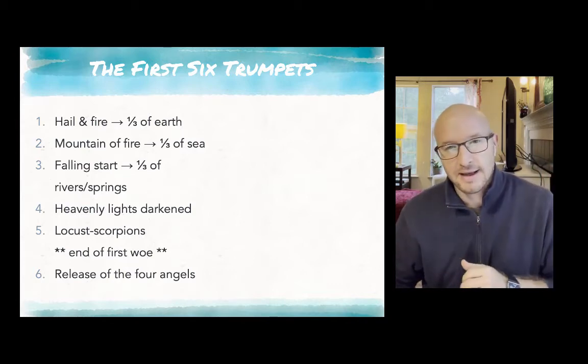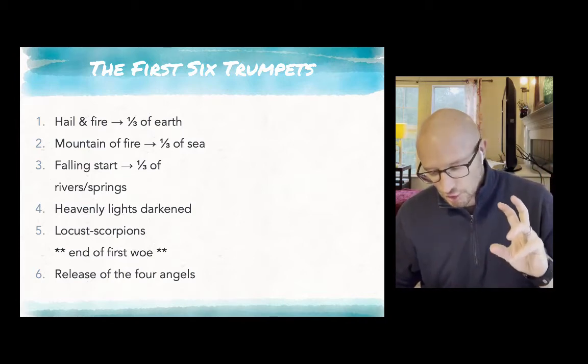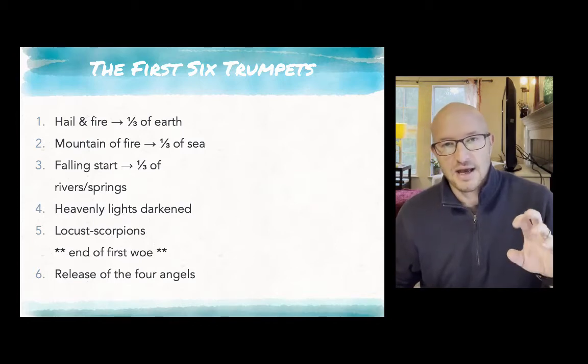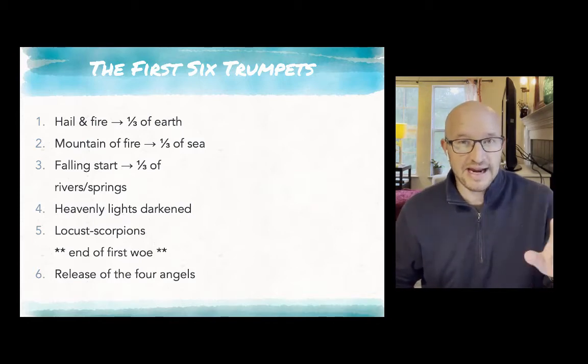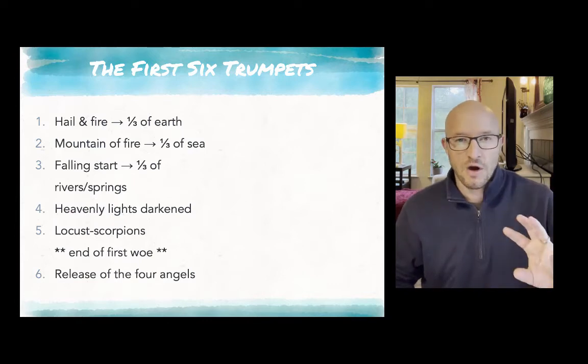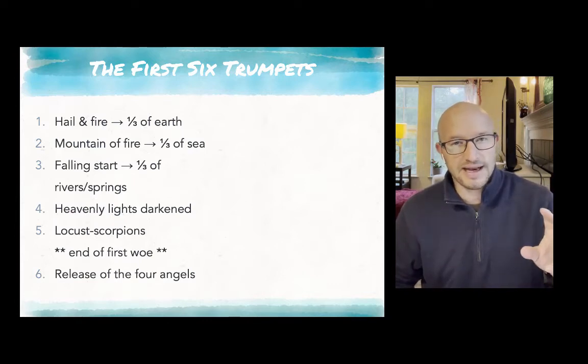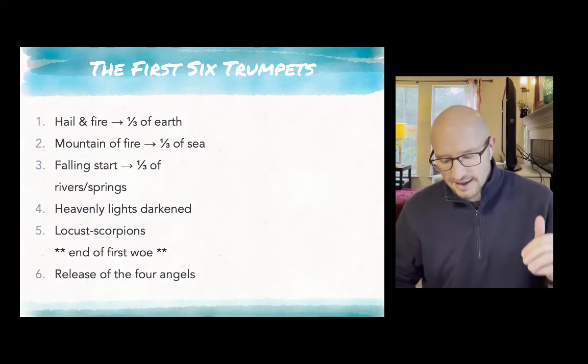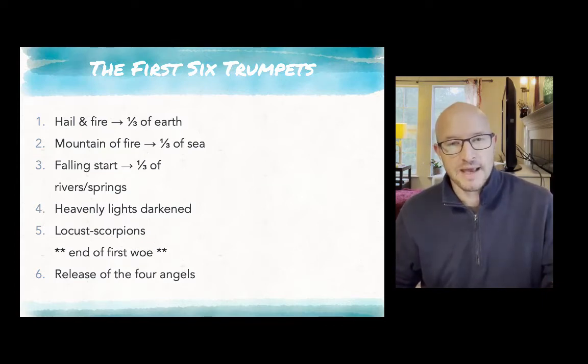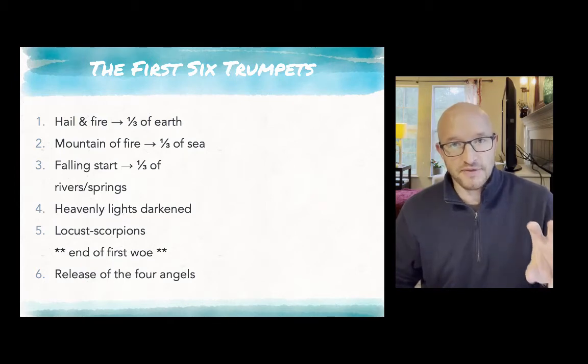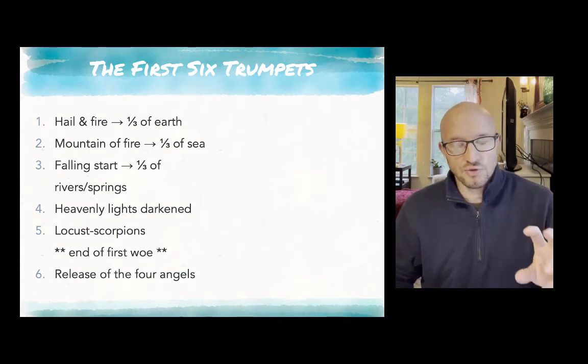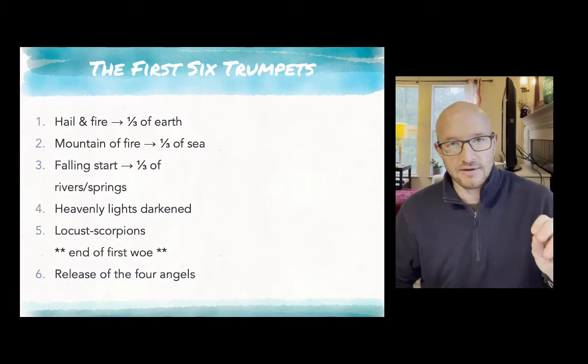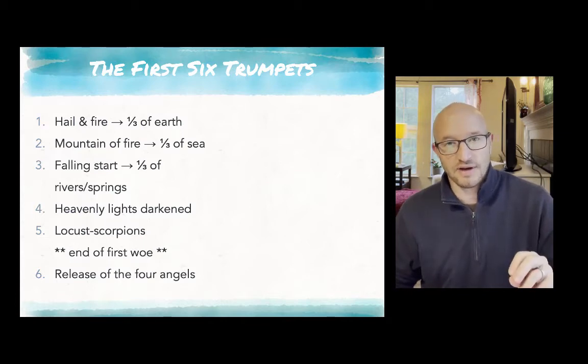And then the fourth trumpet blasts and all of the heavenly orbits, all of the heavenly lights, the sun and the moon and the stars are all darkened. And again, this language of one third darkened is significant. And then the angel speaks up, and I think what's interesting about these first four woes or first four plagues or catastrophes is the degree to which they connect with two Old Testament precedents.